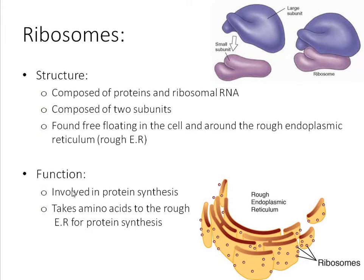Functionally, ribosomes are involved in protein synthesis — that is, building proteins. More specifically, they take amino acids, which are our building blocks of proteins, and assemble them into proteins at the rough endoplasmic reticulum. On the diagram, we can see our rough endoplasmic reticulum: these sacs with little dots indicated as ribosomes, all over it like freckles, helping to build proteins.